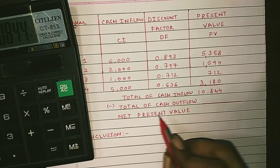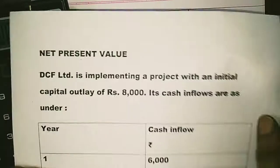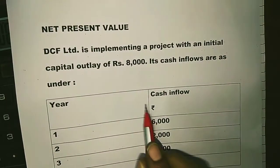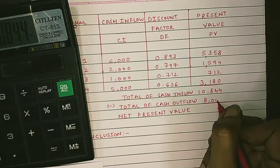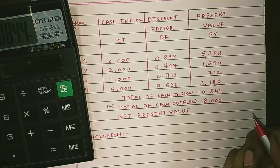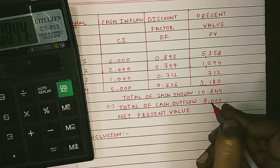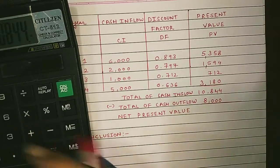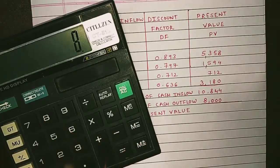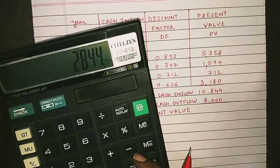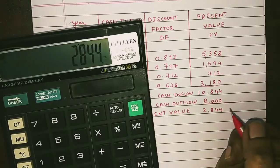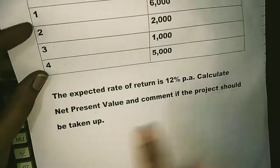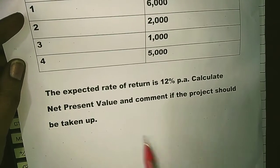From this total we deduct the total cash outflow. The cash outflow is the initial capital outlay of rupees 8000, as given in the question. So we subtract 8000 from 10,844. The difference is the Net Present Value, which is rupees 2844.